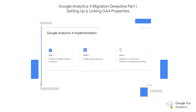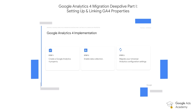In step two, over time, we can create, import and activate Google Analytics 4 audiences and conversions. And then eventually step three is to move over business-critical reporting from Universal Analytics to Google Analytics 4.